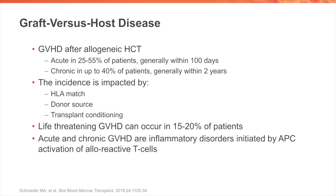Graft versus host disease occurs after allogeneic stem cell transplant and can affect 25 to 55 percent of patients in its acute form and up to 40 percent of patients in its chronic form, usually occurring within the first two years. The incidence is impacted by HLA match, donor source, and transplant conditioning. Life-threatening graft versus host disease can occur in 15 to 20 percent of patients, and both acute and chronic forms are inflammatory disorders initiated by antigen-presenting cell activation of alloreactive T cells.